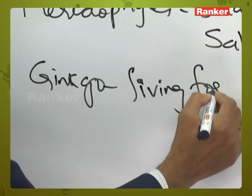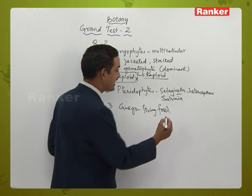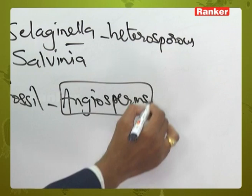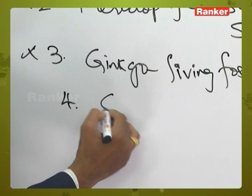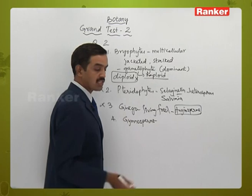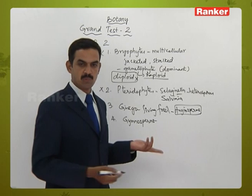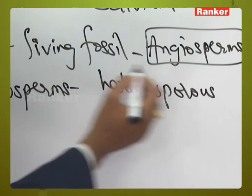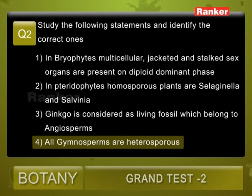Statement four: all gymnosperms are heterosporous — they produce two types of spores: microspores and macrospores. This statement is exactly correct. So from the four statements, only the fourth is correct. Question number two: the correct answer is four.